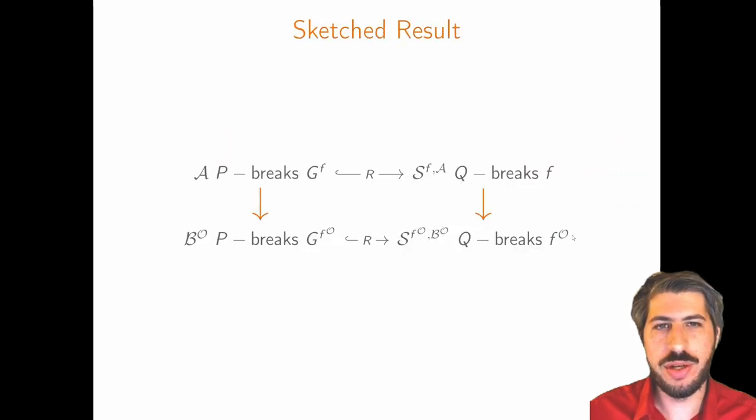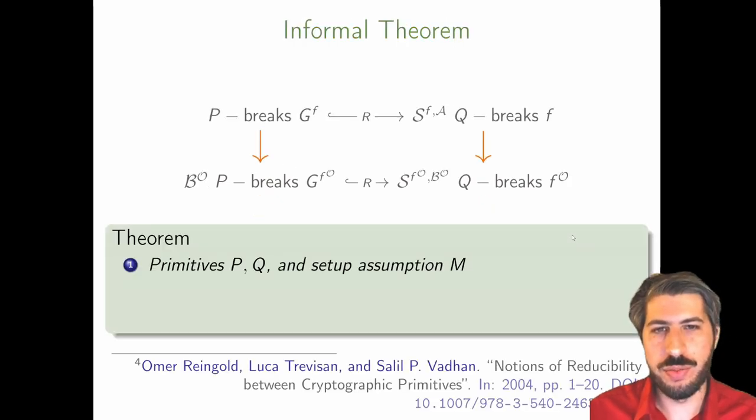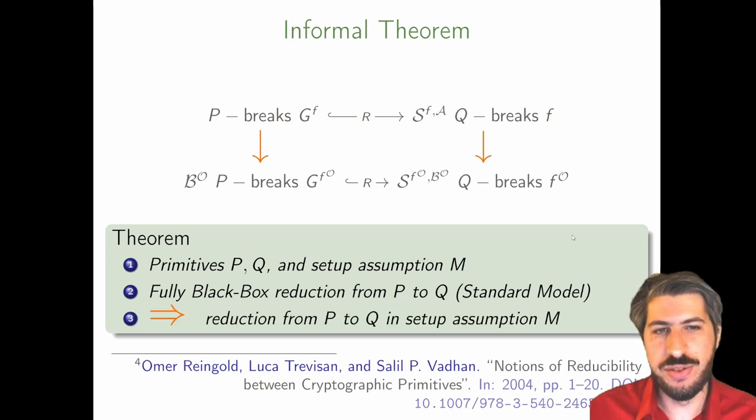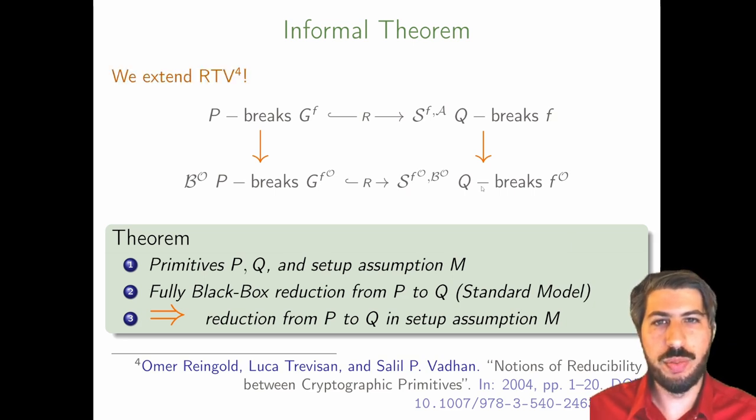We tackled all these problems. In particular, we saw that the standard model has a lifting correspondence to any well-defined setup assumption. In detail, for any primitives P and Q and some setup assumption M which satisfies certain properties, any fully black box non-programmable reduction from P to Q naturally lifts to the setup assumption M. Note that we build on top of Hofheinz and Iowen and not the framework of Rheingold, Trevisan, and Vadhan, which is more abstract.